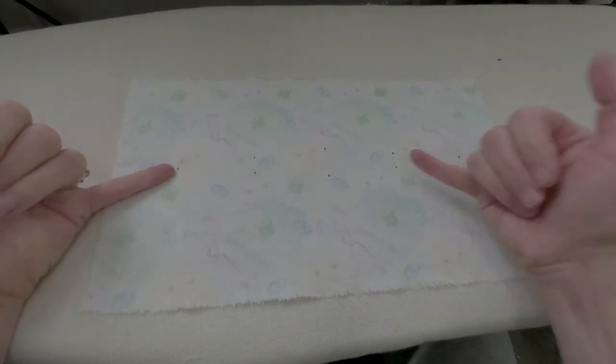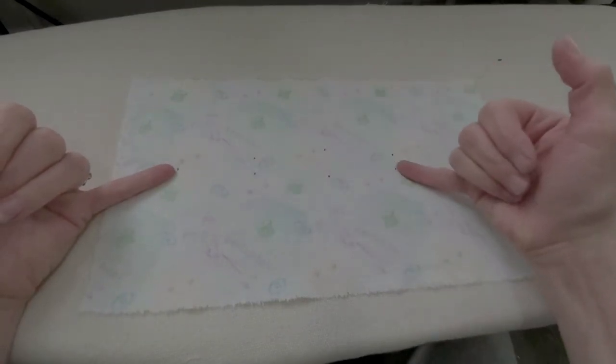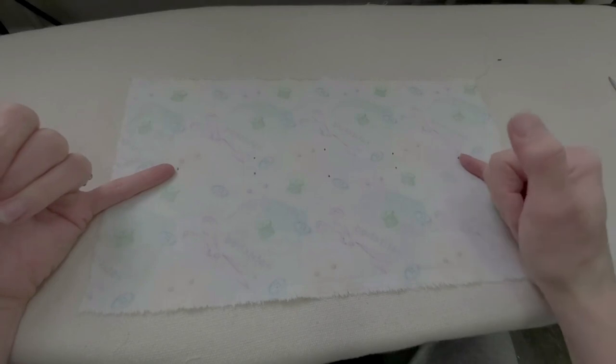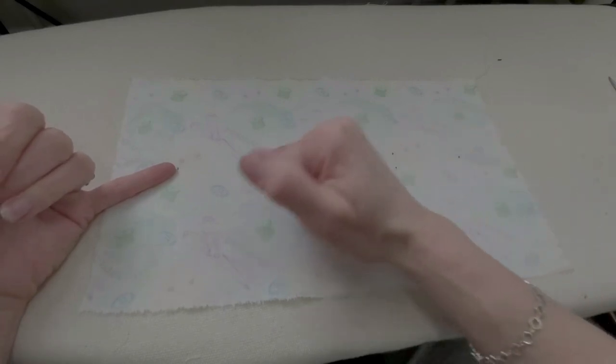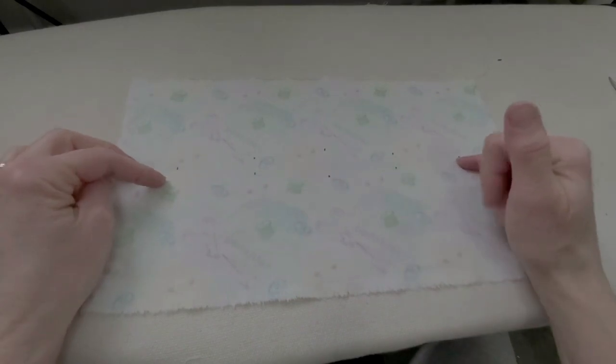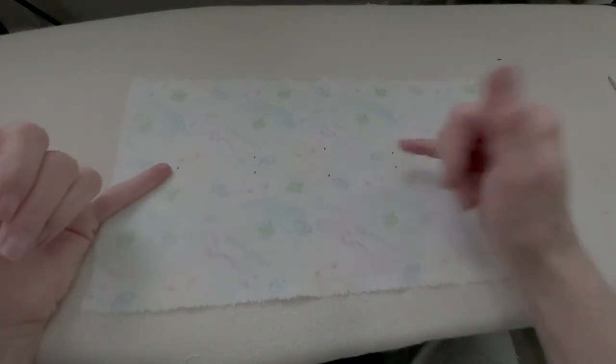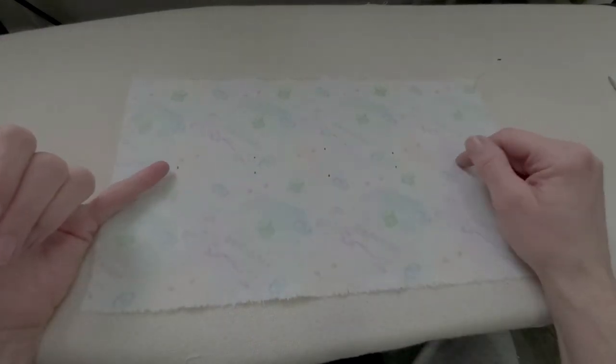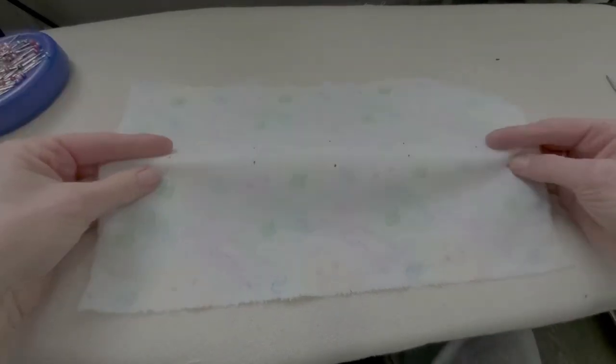A pattern would usually come with circles that you could mark either with tracing paper and a wheel or with pins. Because it is a shaped dart, tracing paper and a tracing wheel are sometimes the best way to mark that.